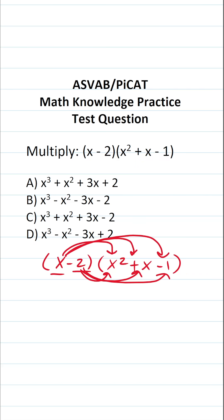x times x squared is going to be x to the third. x times x is going to be x squared. And then x times negative 1 is negative x. Negative 2 times x squared is negative 2x squared. Negative 2 times x is negative 2x. And negative 2 times negative 1, a negative times a negative is going to be a positive. It's going to be positive 2.